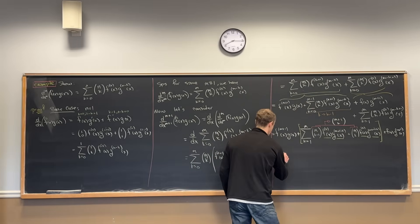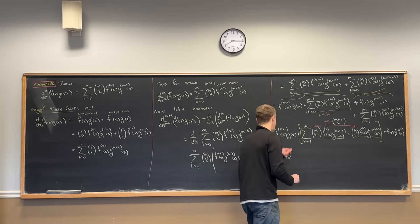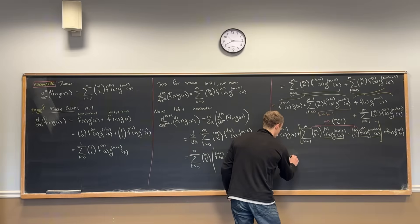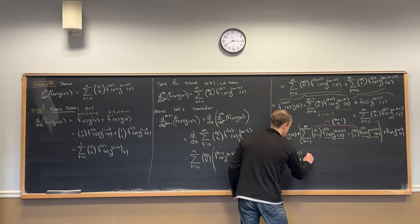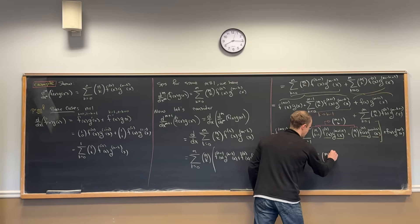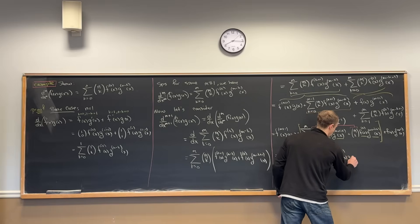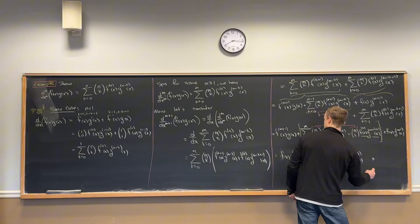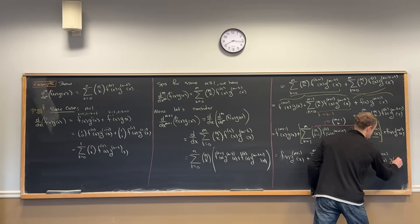So now let's check out what we have: the (m+1)st derivative of f, then f and the (m+1)st derivative of g, plus the sum as k goes from 1 to m of m plus 1 choose k, times the kth derivative of f, times the (m plus 1 minus k)th derivative of g. Outside the sum we have the (m+1)st derivative of f and the zeroth derivative of g.